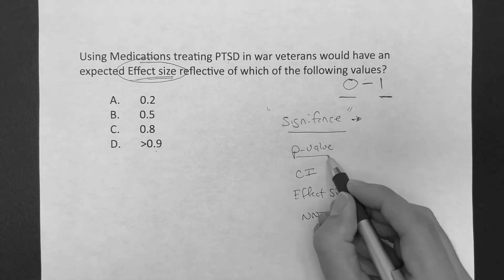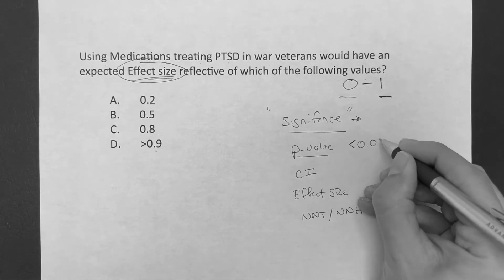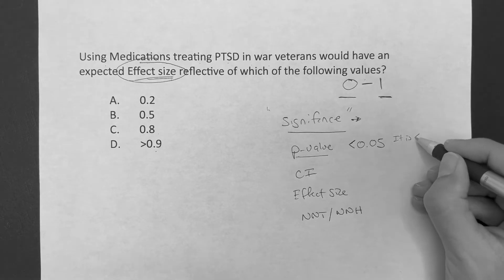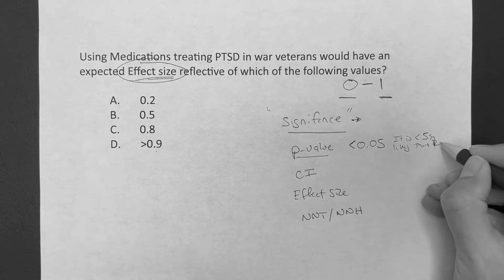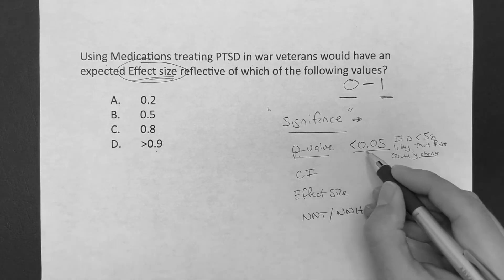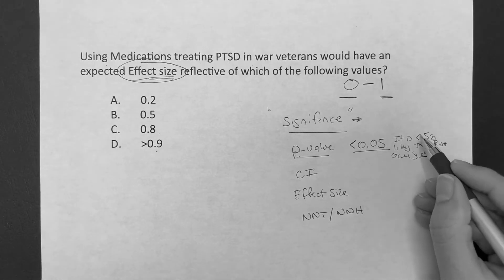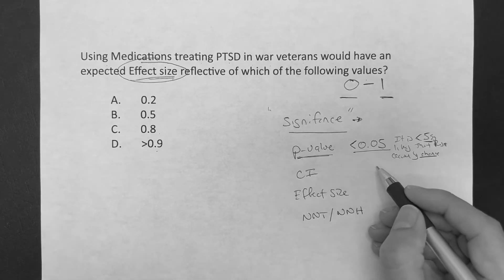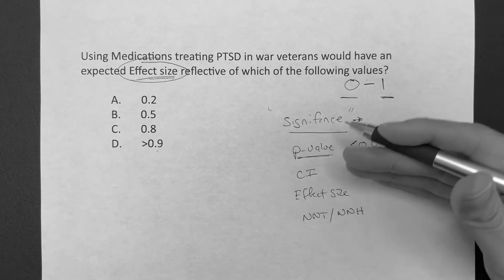When you do p-value, what's our standard? We like it to be less than 0.05. That is essentially saying that it is less than 5% likely that the result occurred by chance. So we want this small — 0.05 or less. But just because something has a p-value of 0.05 or smaller doesn't mean it's really going to have significance in your practice. That's where effect size comes in.